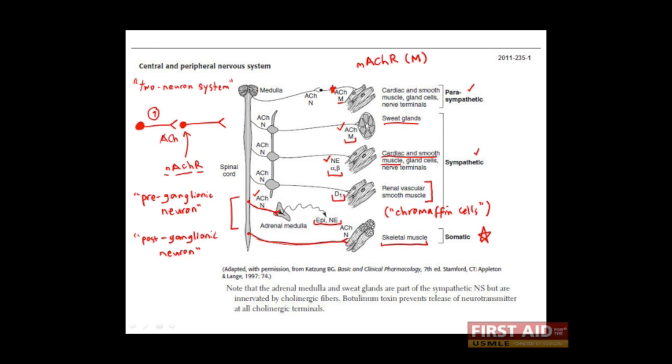In summary, the autonomic nervous system can be divided into the parasympathetic and sympathetic divisions. Each operates by a two-neuron system. The first or preganglionic neuron releases acetylcholine, which binds to nicotinic acetylcholine receptors found on the second or postganglionic neuron. Depending on the type, the second neuron can release any number of neurotransmitters, which then exert their effects on target tissues.